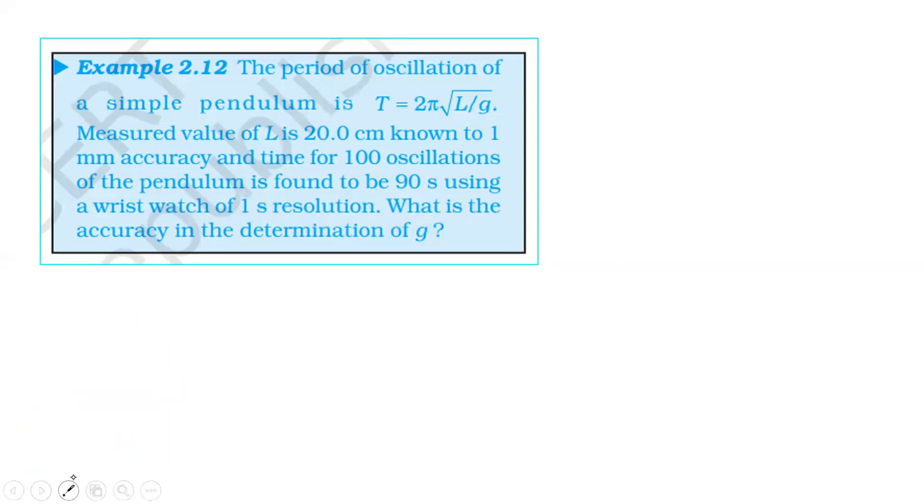What is the accuracy in the determination of g? Delta L is 1 mm. If delta T is 1 second and T is 90 seconds. Delta L is 1 mm. We can use 1 cm. The length is 20 cm. If we find the accuracy in g, it is a percentage. Then delta g by g percentage.